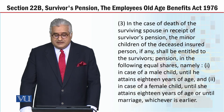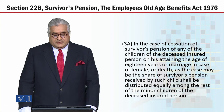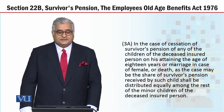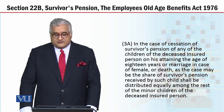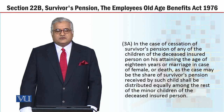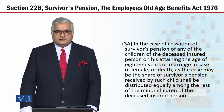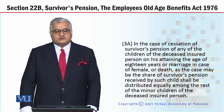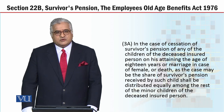تو 3A کیا کہتا ہے: in the case of secession of survivor's pension of any of the children of the deceased insured person, on his attaining the age of 18 years or marriage in case of female, or death as the case may be, the share of survivor's pension received by such child shall be distributed equally among the rest of the minor children of the deceased insured person. اگر ان بچوں میں سے کوئی بچہ جو ہے وہ cease کر جاتا ہے کہ اس کی age 18 سال ہو جائے یا خاتون کی شکل میں اس کی شادی ہو جائے، تو پھر جو pension بچ جائے گی وہ باقی بچوں میں equally distribute کر دی جائے گی جو کہ minor ہوں گے۔